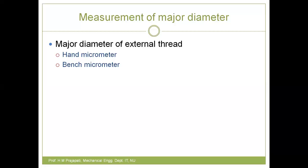In the previous video, we discussed basic terminology related to screw thread metrology — major diameter, minor diameter, mean diameter, pitch, and thread angle. In subsequent videos, we will be discussing how to do measurement of these features after manufacturing of a screw. In today's video, we will be discussing how to measure major diameter and minor diameter for internal and external threads.